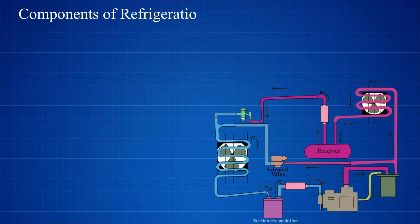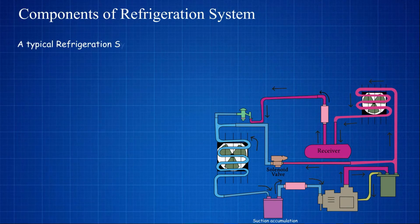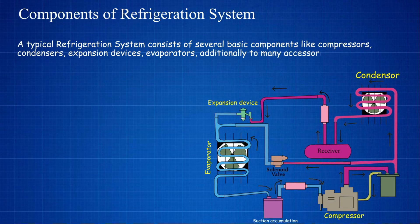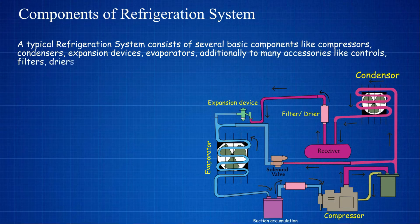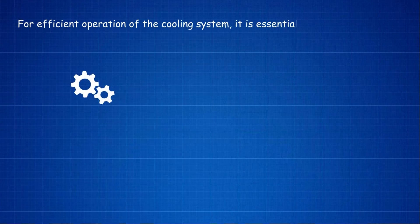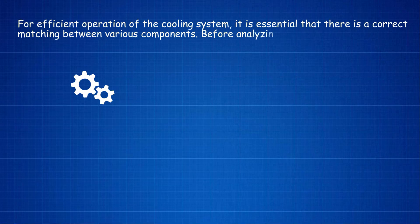Components of refrigeration system. A typical refrigeration system consists of several basic components like compressors, condensers, expansion devices, evaporators, additionally many accessories like controls, filters, dryers, oil separators, and so on. For efficient operation of the cooling system, it is essential that there is a correct matching between various components before analyzing the balanced performance of the entire system.